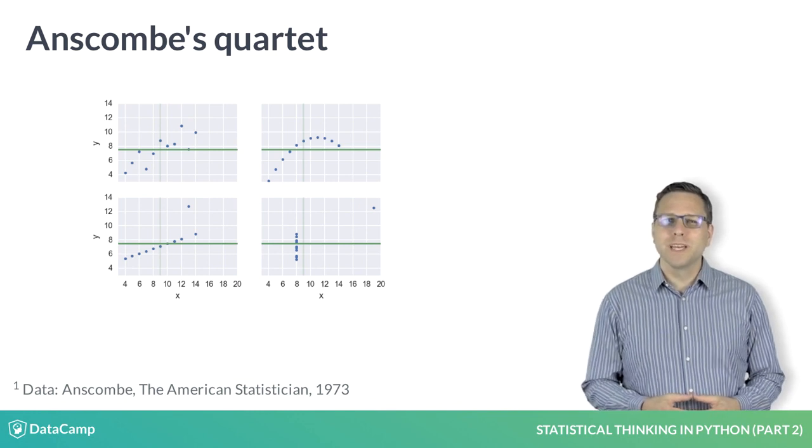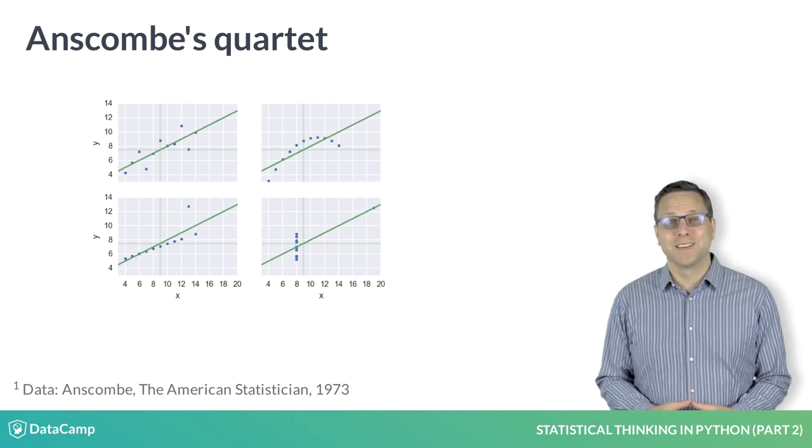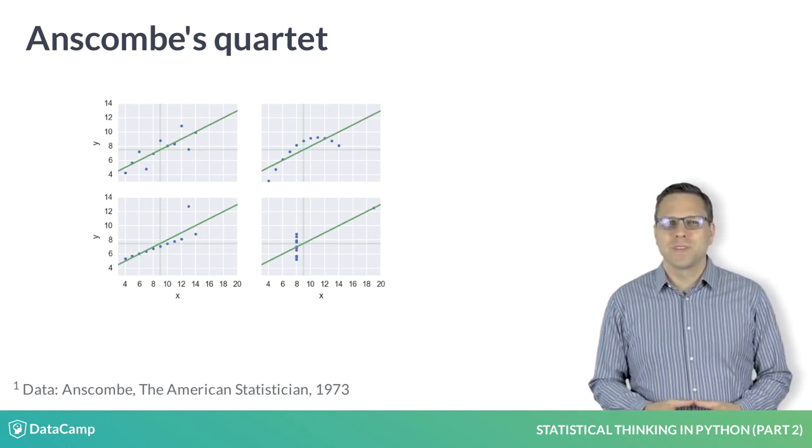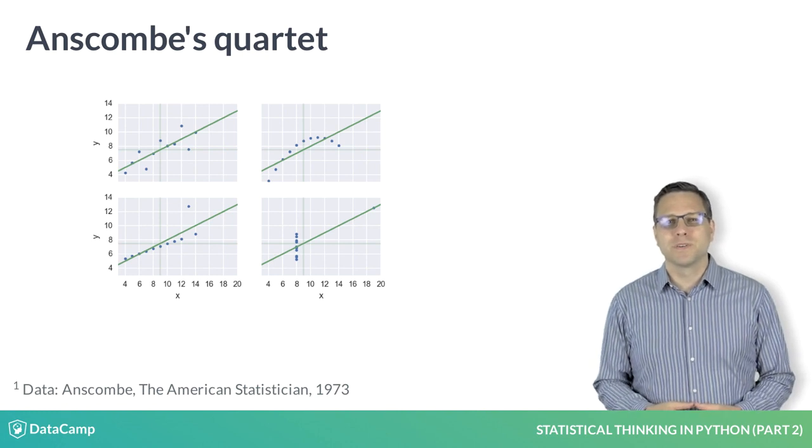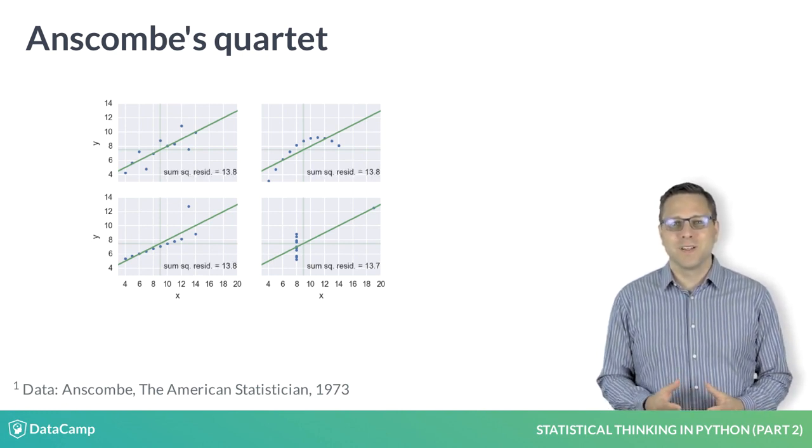And what if we do a linear regression on each of the data sets? They all have the same line. Surely, some of the fits are less optimal than others. Let's look at the sum of the squares, the residuals. Oh my, they are basically all the same as well.